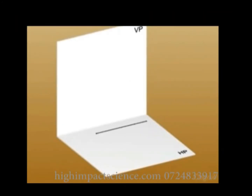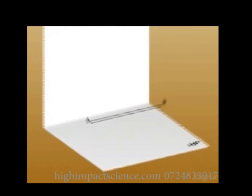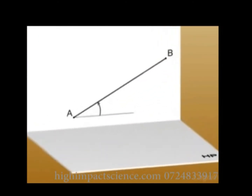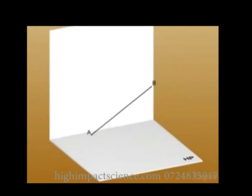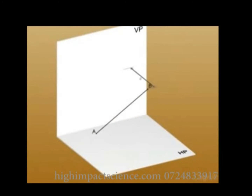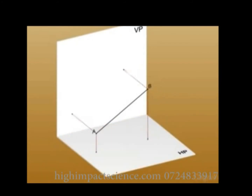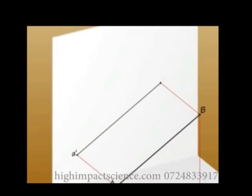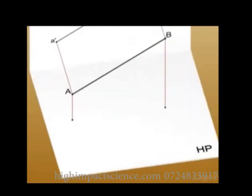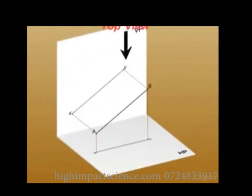Consider another case. A line AB is inclined to HP at an angle theta, and parallel to VP at a distance of D units. Point A is H1 units above HP, and point B is H2 units above HP. The projection of line AB onto VP and HP is the line A'B' as the front view, and the line AB as the top view, respectively.